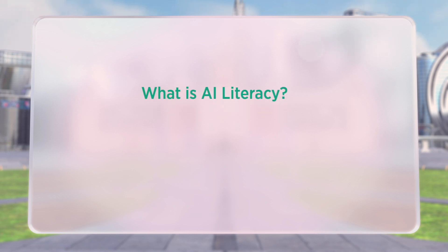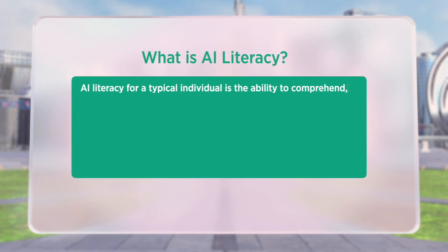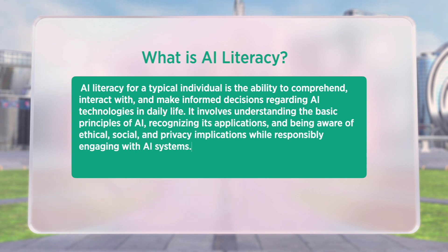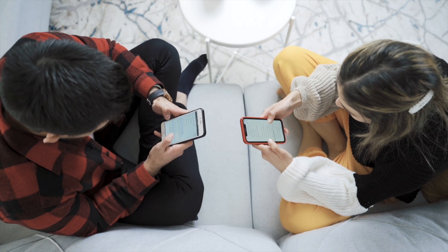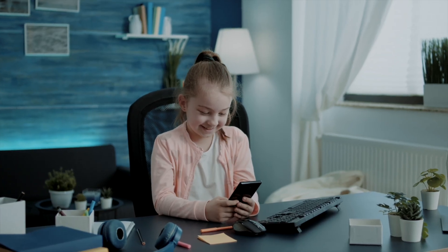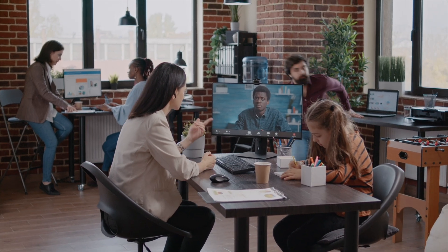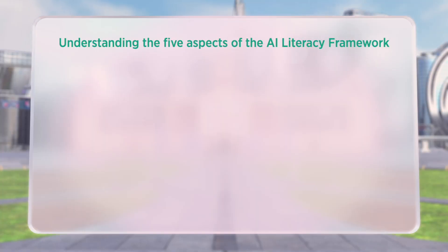AI literacy for a typical individual is the ability to comprehend, interact with, and make informed decisions regarding artificial intelligence technology in daily life. It involves understanding the basic principles of AI, recognizing its applications, and being aware of ethical, social, and privacy implications while responsibly engaging with AI systems. This level of literacy does not require in-depth technical AI knowledge, but should include a general understanding of the following aspects.